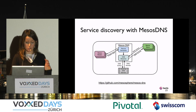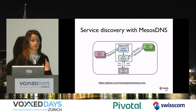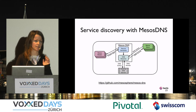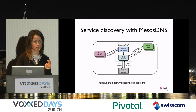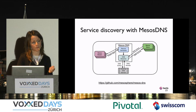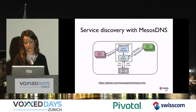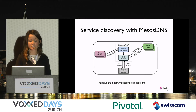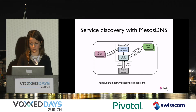MesosDNS has a record generator. It asks the Mesos master for the IPs and ports of each app registered to the Mesos cluster. And each Mesos slave will ask MesosDNS where a service is located.